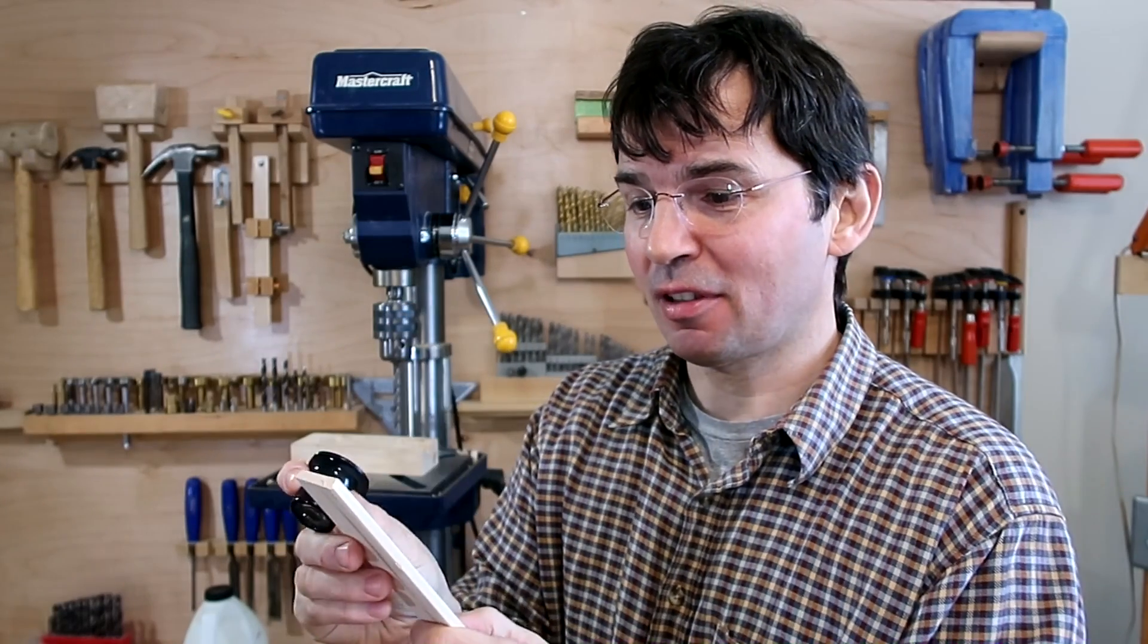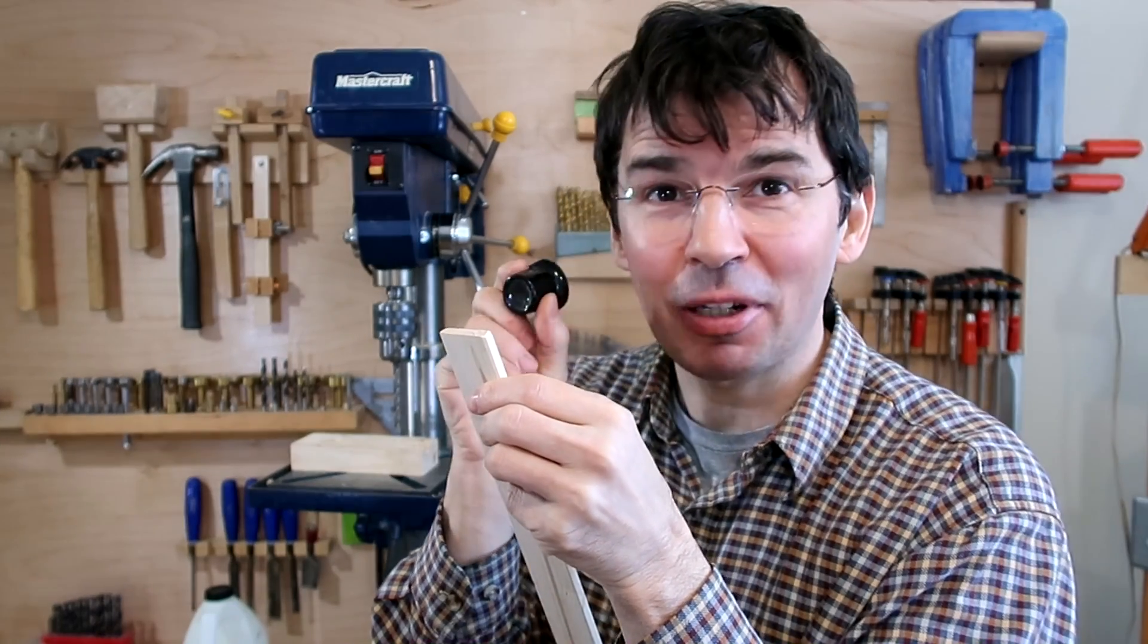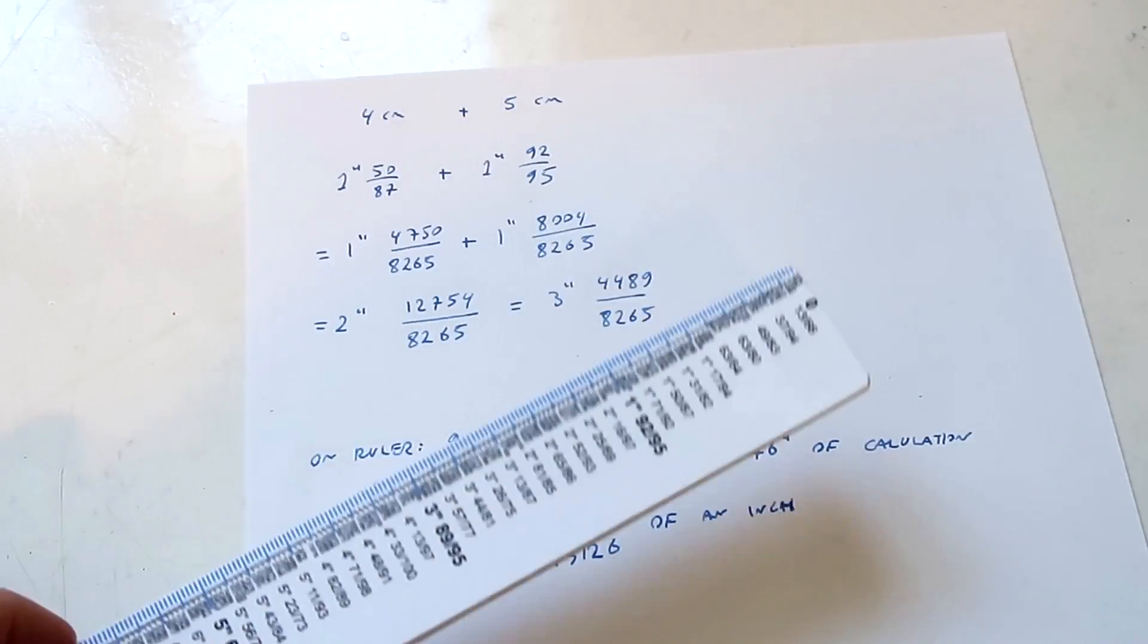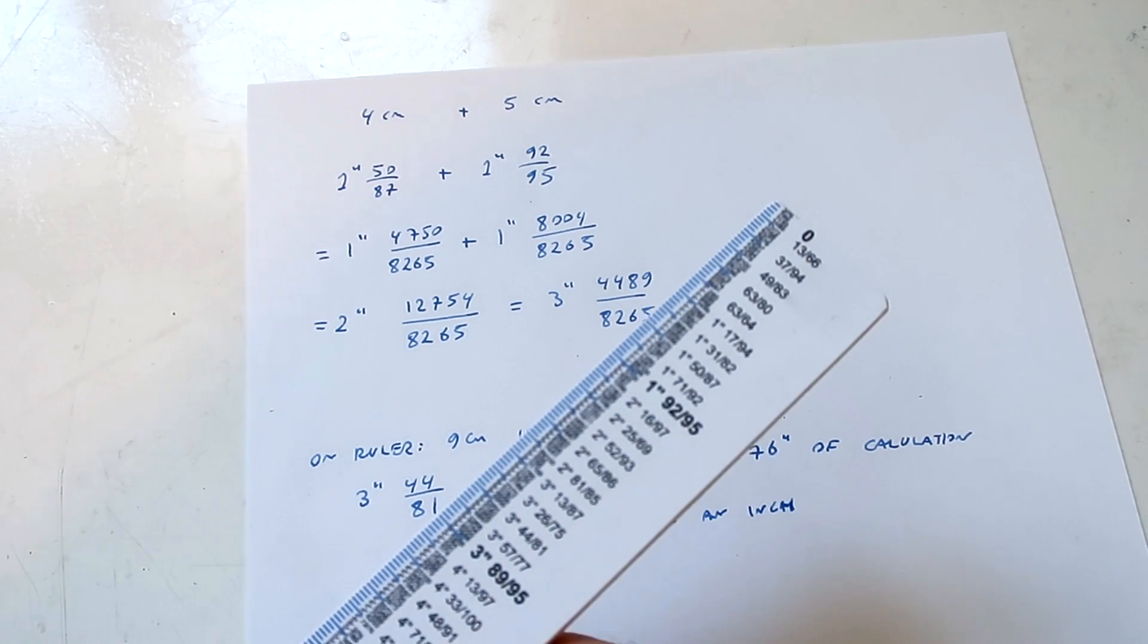And for instance 25 millimeters is 63/64ths of an inch. I guess some of them do work out to powers of two for the denominator. Now you can still do arithmetic with measurements off of this ruler and I know inches people like that kind of fun.